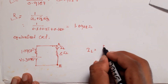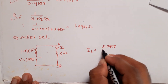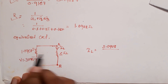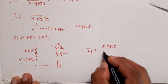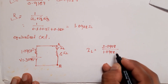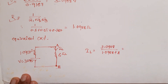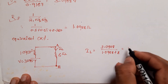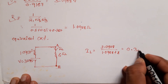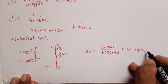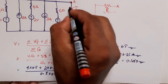The load current IL equals this voltage 3.0908 divided by those two resistances connected in series: 1.0908 plus 8. That gives us the final result: IL equal to 0.3402 ampere. This is the final current in the AB branch.